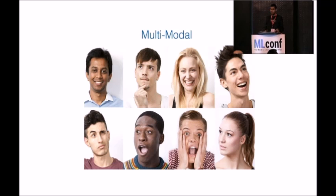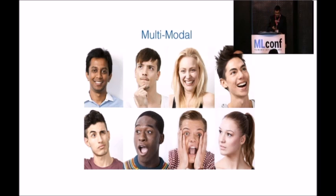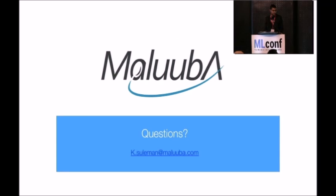The final key problem for human-like conversations is multimodality. When you make a joke, you can tell whether the person was offended or laughed by their reaction — but Siri and chatbots have no idea whether they've made you laugh or insulted you. There has been good work in one-shot situations like image captioning or image QA, but this work has yet to be incorporated into dialogue systems and into determining rewards from more complex signals. That brings an end to my talk. If you have any questions, feel free to email me. Thank you.